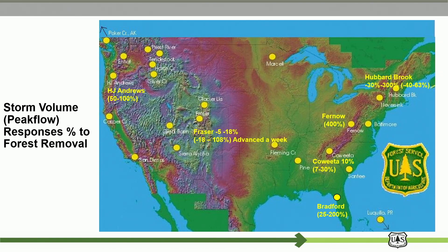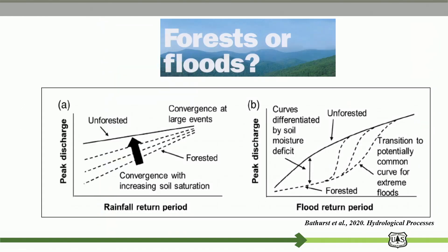Forest hydrology also cares about flooding — whether removing forests will increase flooding. Different hydrological parameters relate to evapotranspiration. Not a lot of people realize this, but if you look carefully, forest land can reduce flooding because the soil is drier before the storm, because soil moisture is lower due to higher ET.